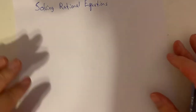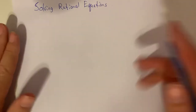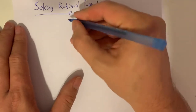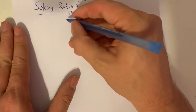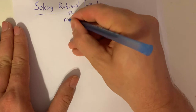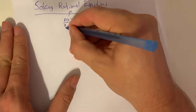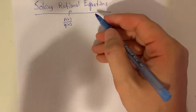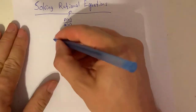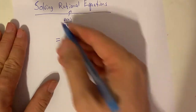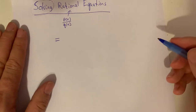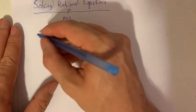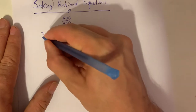Today's lesson is on solving rational equations. Things that are rational have a ratio, so it's a polynomial divided by another polynomial. An equation has an equal sign and we're trying to find out what x is — that's what solving an equation means. We can start with something fairly simple: this is an example of a rational equation.